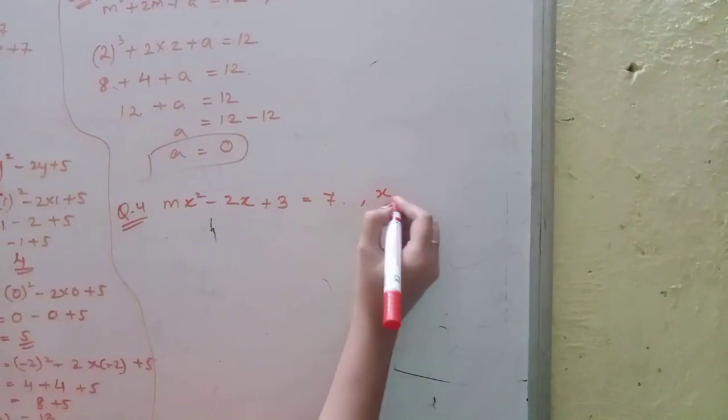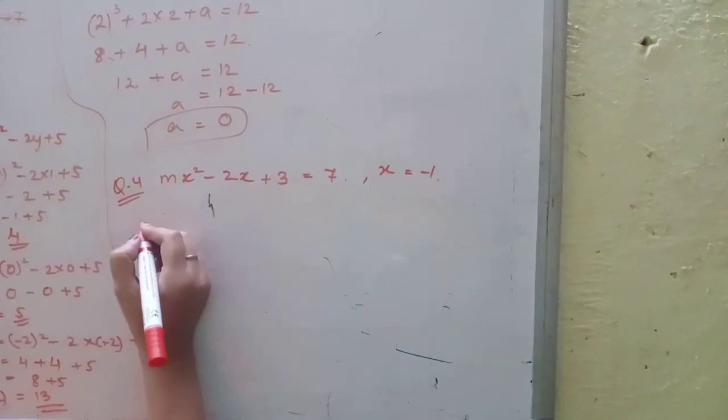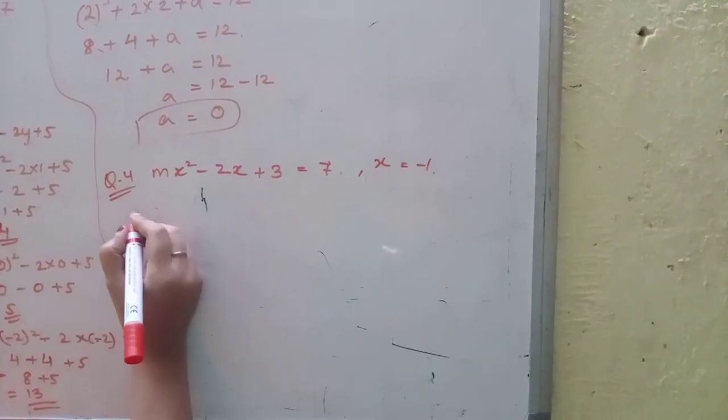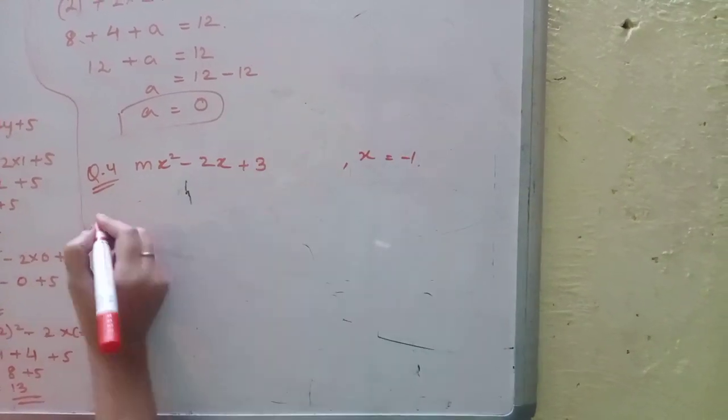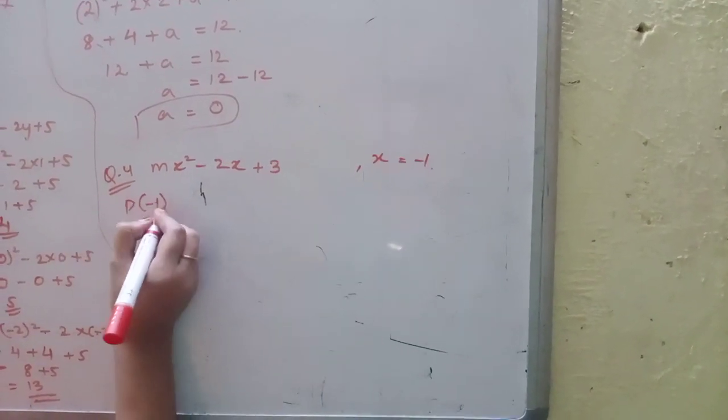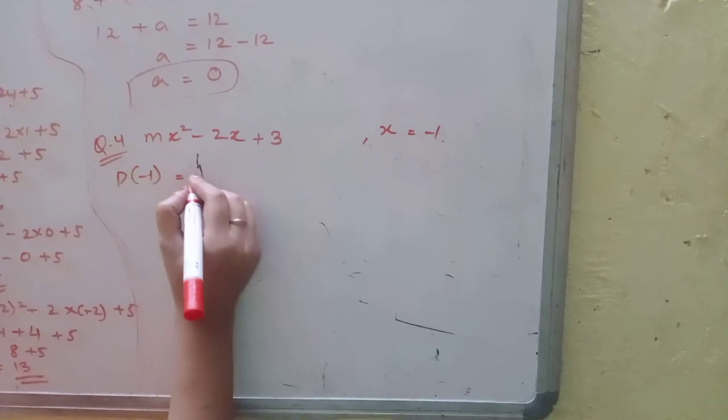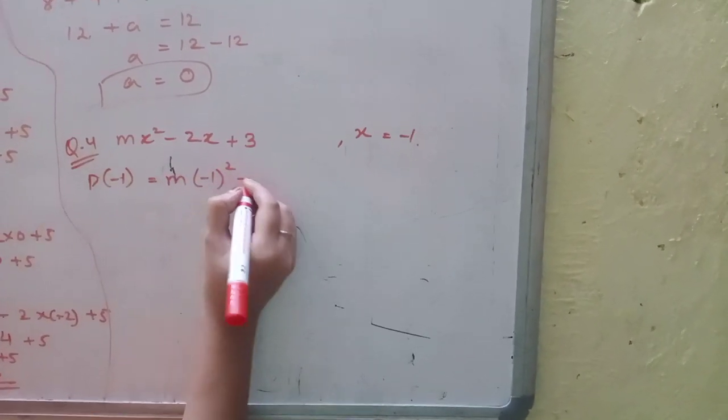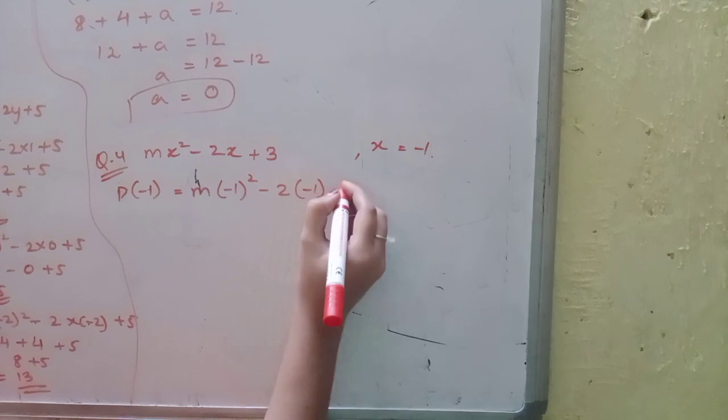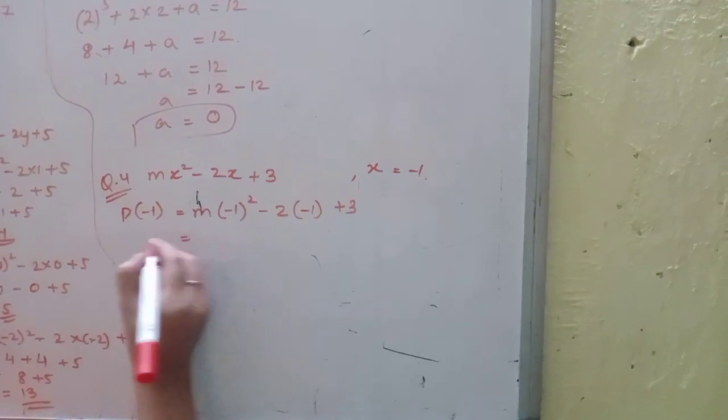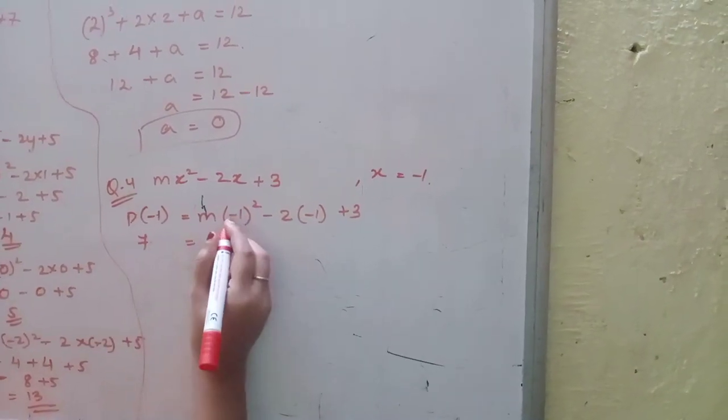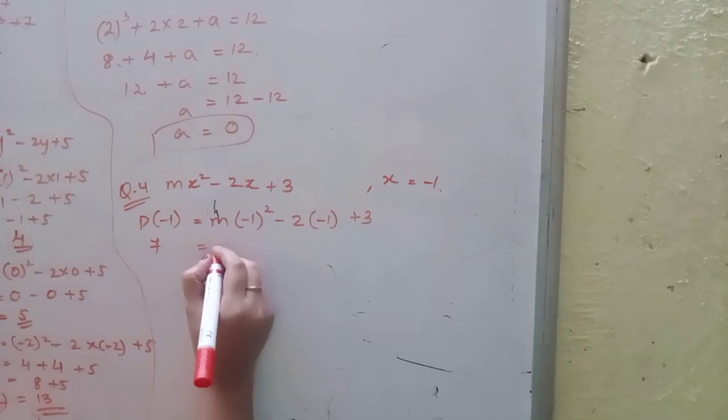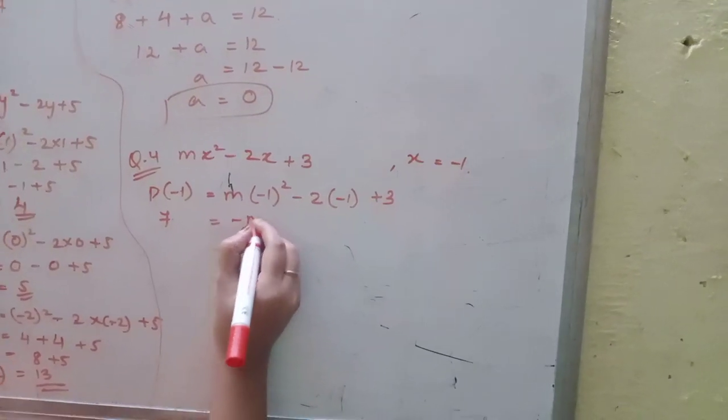So P(-1) = m(-1)² - 2(-1) + 3 = 7. M times 1 minus -2 plus 3 equals 7.